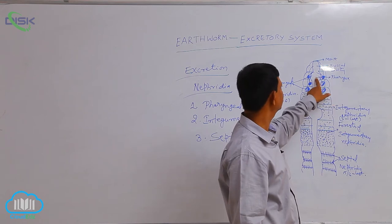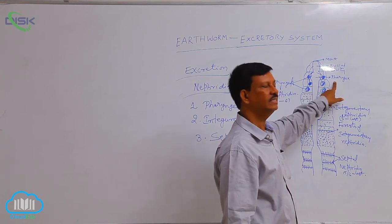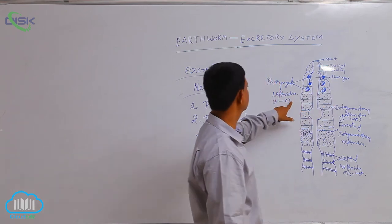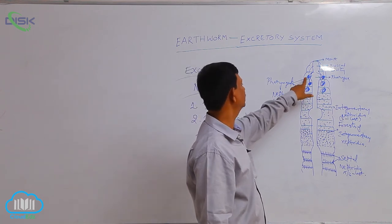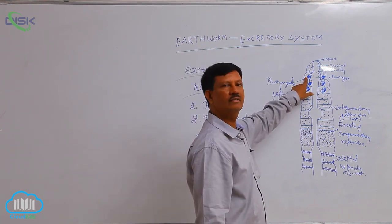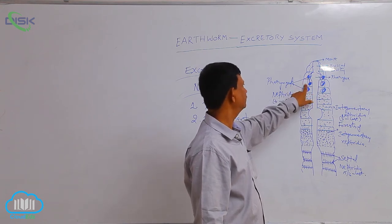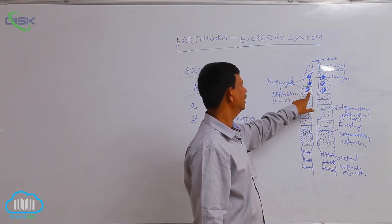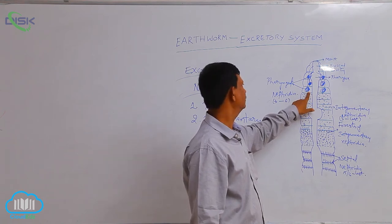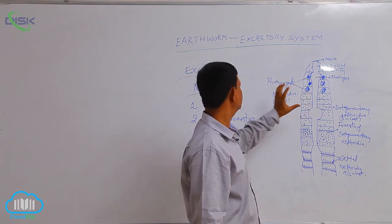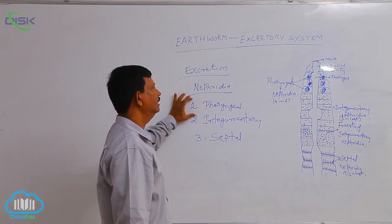You can see here — this is the pharyngeal nephridia in the fourth, fifth, and sixth segments. There are three pairs. The first pair is found in the fourth segment near the pharyngeal region, the second pair is in the fifth segment, and the third pair is in the sixth segment. These are the three pairs of pharyngeal nephridia found in earthworm.